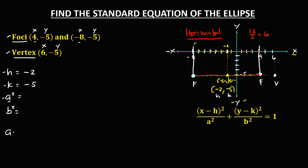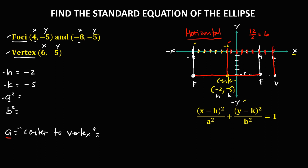For a squared, we solve for a as the distance from center to vertex. From the graph, counting from center to vertex gives us 1, 2, 3, 4, 5, 6, 7, 8. Therefore a is equal to 8, and a squared is 8 to the power of 2, which equals 64.